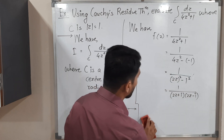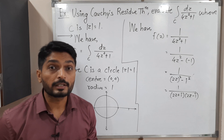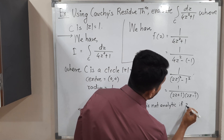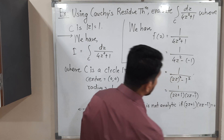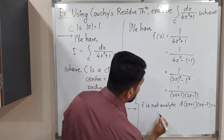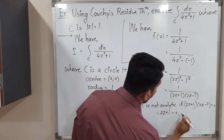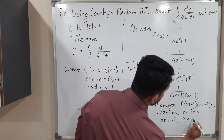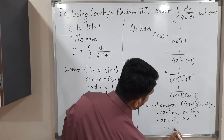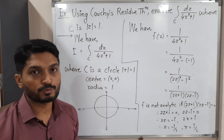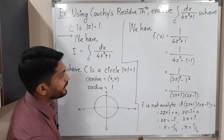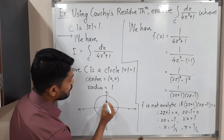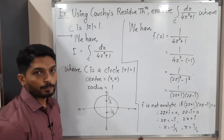F is not analytic where the denominator is 0, i.e., where (2z plus i)(2z minus i) = 0. That means either 2z plus i = 0, giving z = minus i/2, or 2z minus i = 0, giving z = i/2. So we have two singular points: z = i/2 and z = minus i/2. Plotting them, i/2 lies on the positive imaginary axis inside C and minus i/2 lies on the negative imaginary axis inside C.